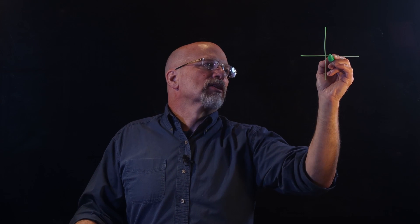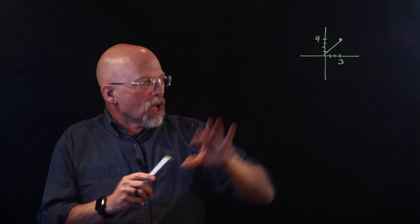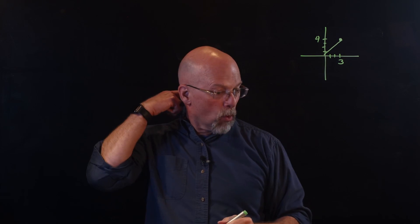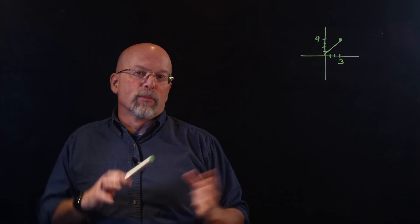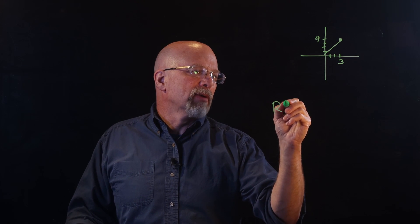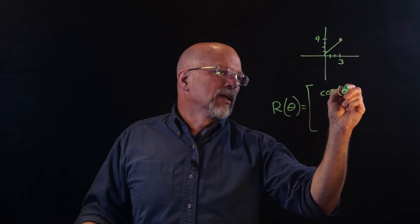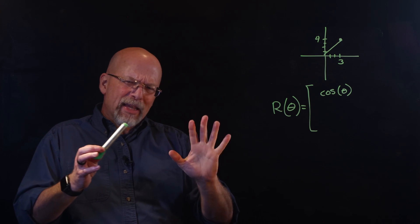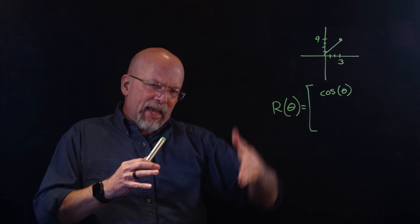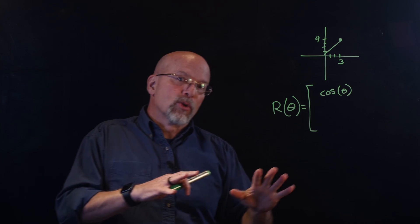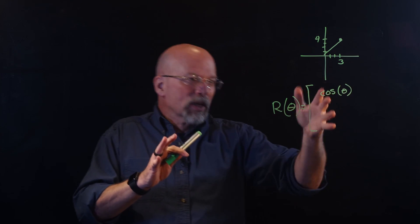Now it turns out I can use matrix multiplication to rotate vectors. The demonstration is in two dimensions, but the same applies in three dimensions. I've got a two-dimensional vector that goes 3 along the x-axis and 4 up the y-axis. There's a standard matrix you multiply that vector by in order to rotate it. Multiplying a 2×2 matrix by a 2×1 vector gives a new 2×1 vector.